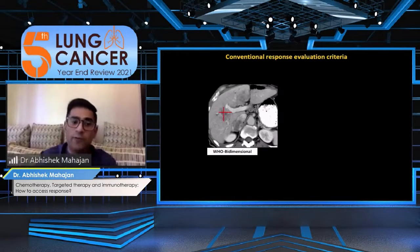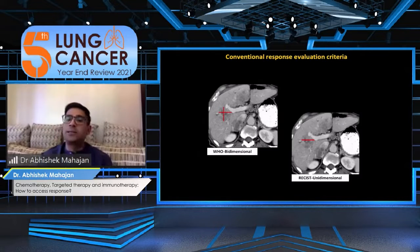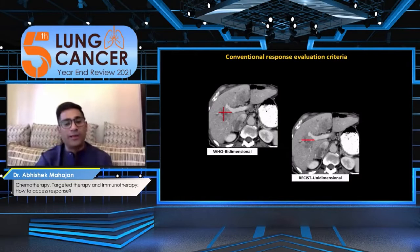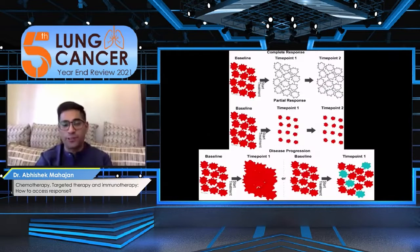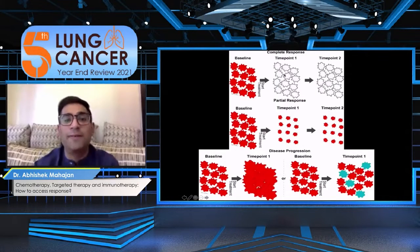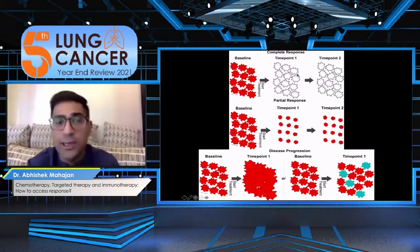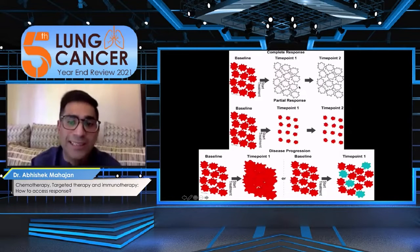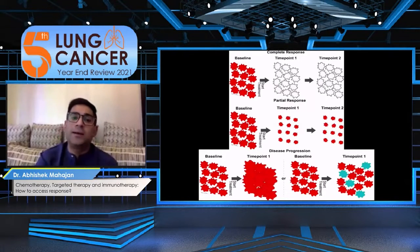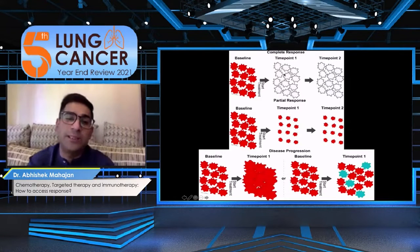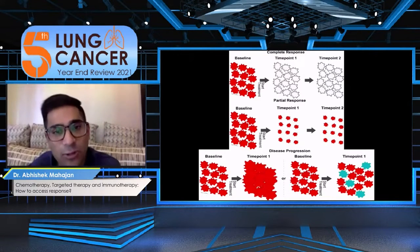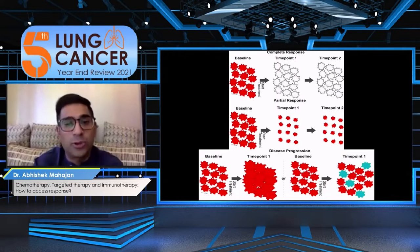We have moved from bi-dimensional WHO criteria to uni-dimensional measurement which is the longest dimension on an axial scan — a uni-directional measurement on RECIST. As per RECIST you can either have a complete response, which is very rarely seen. These kind of responses might be seen on CT and you might still be reporting a residual disease which would have been a complete FDG-negative disease on functional imaging.